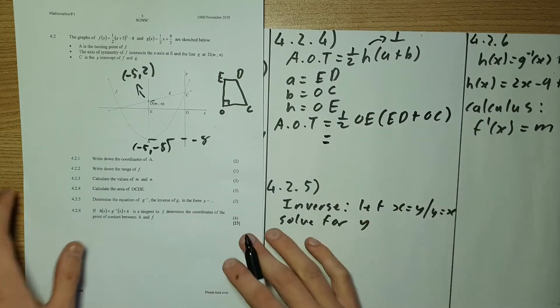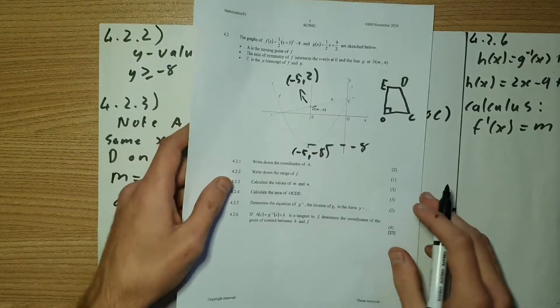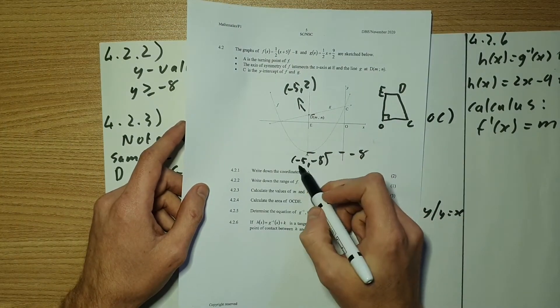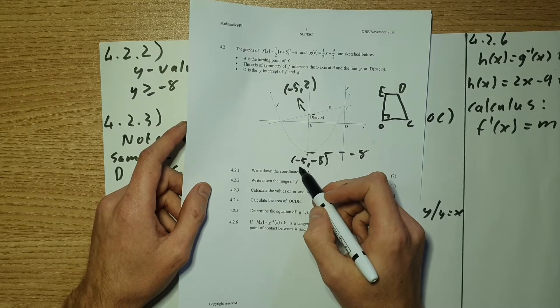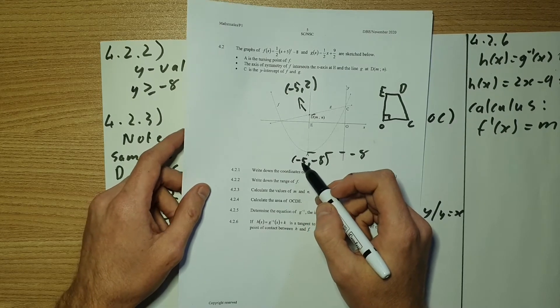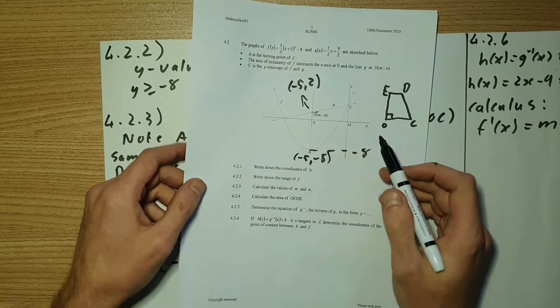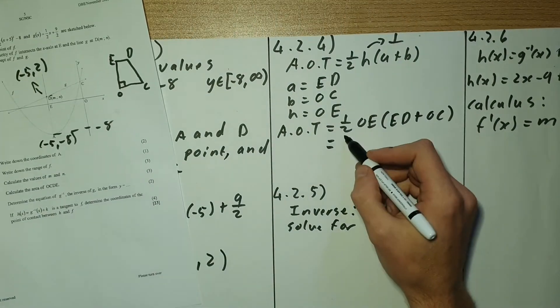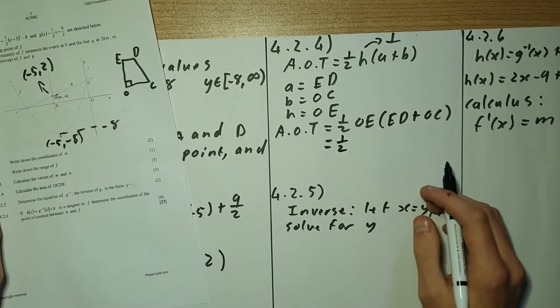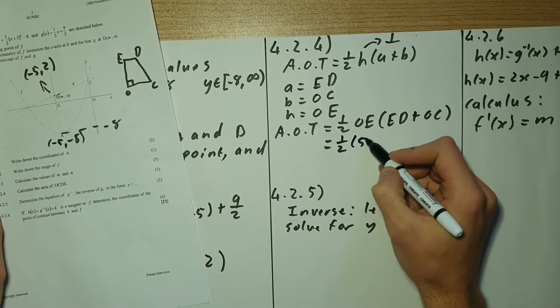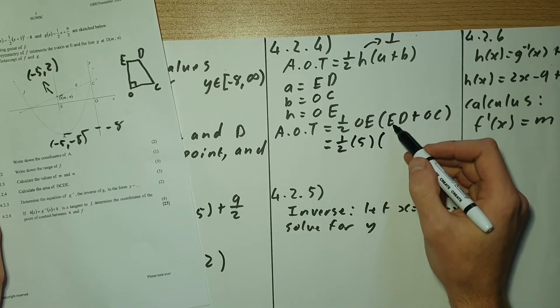So now finding those values, which we have, we know that OE is negative five. But remember, we're taking the absolute value of these. So it's just five units. So we'll have a half. OE is five.